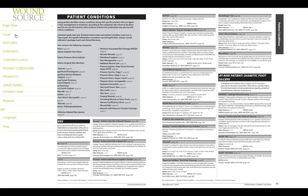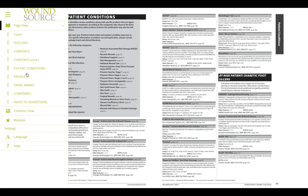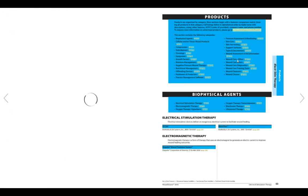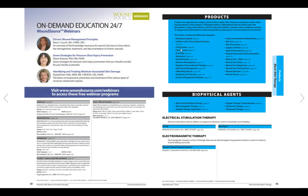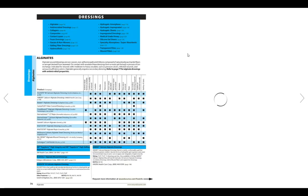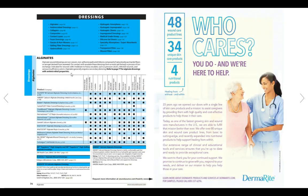If we jump ahead to the product section, you'll see that the products are organized by category and then subcategory within that section. If we jump to dressings, you'll see that at the beginning of the various subcategories there's a comparison grid which allows you to see different features for different products.